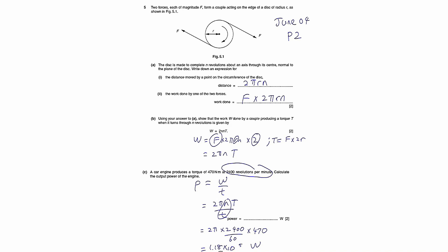The last part of this question, they gave you a torque of 470 at 2400 revs per minute. Let's calculate the output power of the engine using this formula, which is work done.